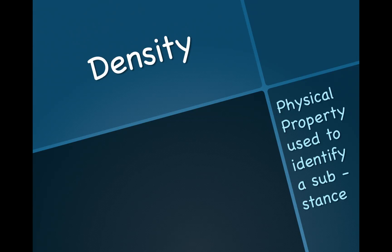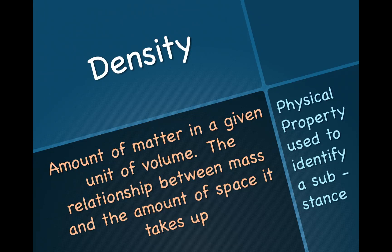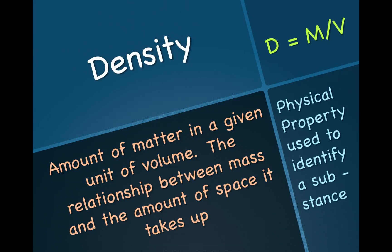This revolves around the concept of density. Density is a physical property that can be used to identify a substance. Density is defined as the amount of matter in a given unit of volume — it's the relationship between mass and the amount of space it takes up. There's a formula for density you need to know: density equals mass divided by volume. Some units for density are grams per liter and grams per cubic centimeter.